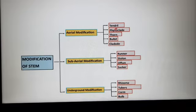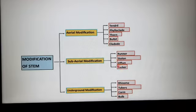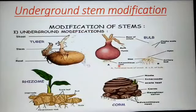In aerial modification, we will discuss tendril, phylloclade, and thorn. In sub-aerial modification: runner, stolon, offset, and sucker. In underground modification: rhizome, tuber, corm, and bud. First of all, we will discuss underground stem modification. For storage of food, some underground stems are modified.